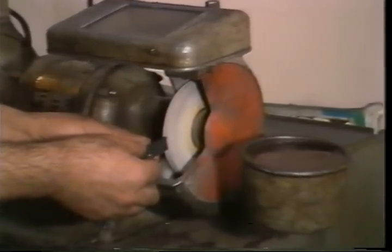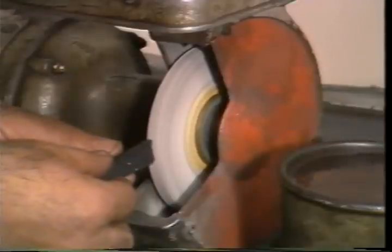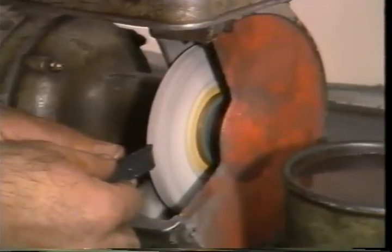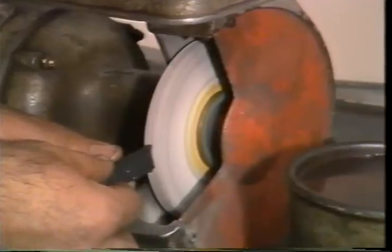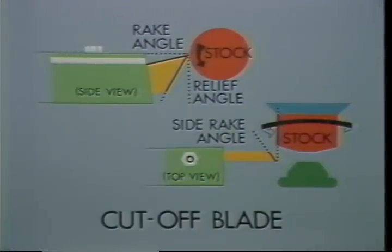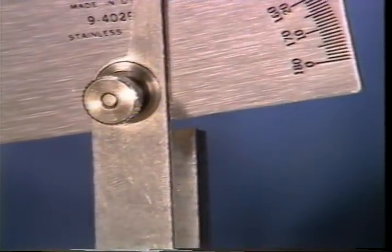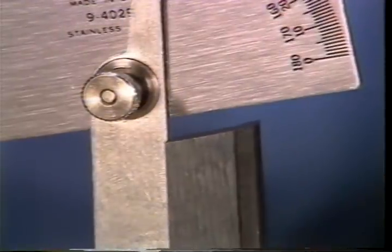There will be times when you need to sharpen the cutoff blade. You can sharpen the cutoff blade by hand using a grinding wheel. There are several angles you must be aware of when sharpening the cutoff blade. It is important to have a proper rake angle, relief angle, and side rake angle to ensure a burr-free part cut-off. A 7-degree side rake angle is normally used for parts that have a center hole. A 10 to 12-degree angle is used for parts that do not have a center hole. The relief angle is normally 10 degrees.